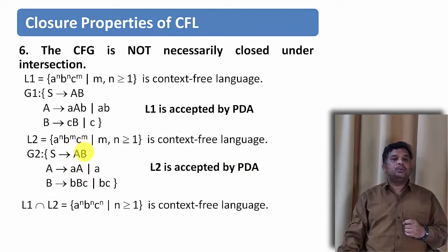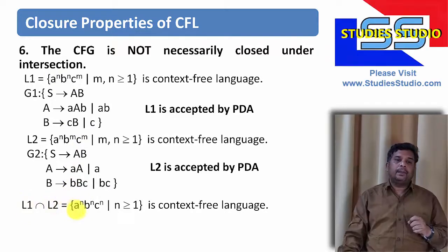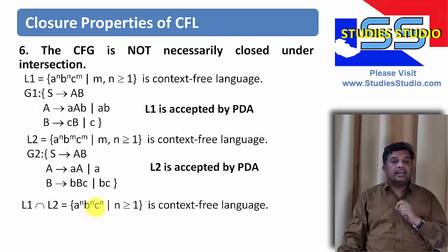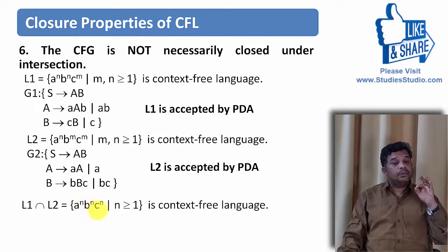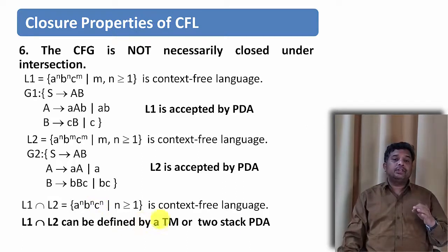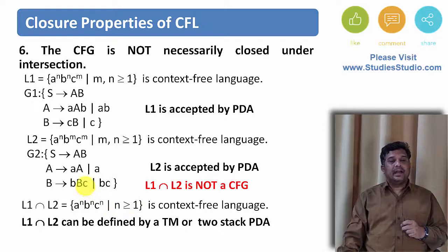Now if I want to take the intersection of both of them — what is common in both — then L1 intersection L2 will be a to the power n, b to the power n, c to the power n, where n is greater than or equal to 1. Here the number of a's equals the number of b's equals the number of c's. I cannot use a pushdown automata to realize strings of this language. I need a Turing machine or a two-stack PDA. When it comes to a Turing machine, obviously this language is not a context-free language.